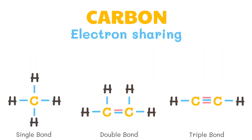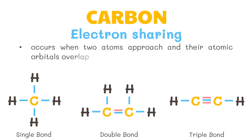Electron sharing occurs when two atoms approach and their atomic orbitals overlap. Bonds that have circular cross-sections and are formed by head-on overlap of atomic orbitals are called sigma bonds. Bonds formed by sideways overlap of p orbitals are called pi bonds.